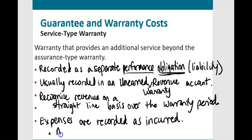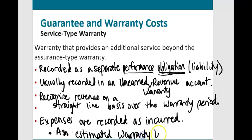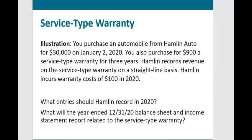Because expenses are recorded as incurred for a service type warranty, an estimated warranty liability account is never used. Example: You purchase an automobile from Hamlin Auto for $30,000 on January 2, 2020, and also purchase for $900 a service type warranty for three years covering 2020, 2021, and 2022. Hamlin records revenue on a straight-line basis and incurs warranty costs of $100 in 2020.